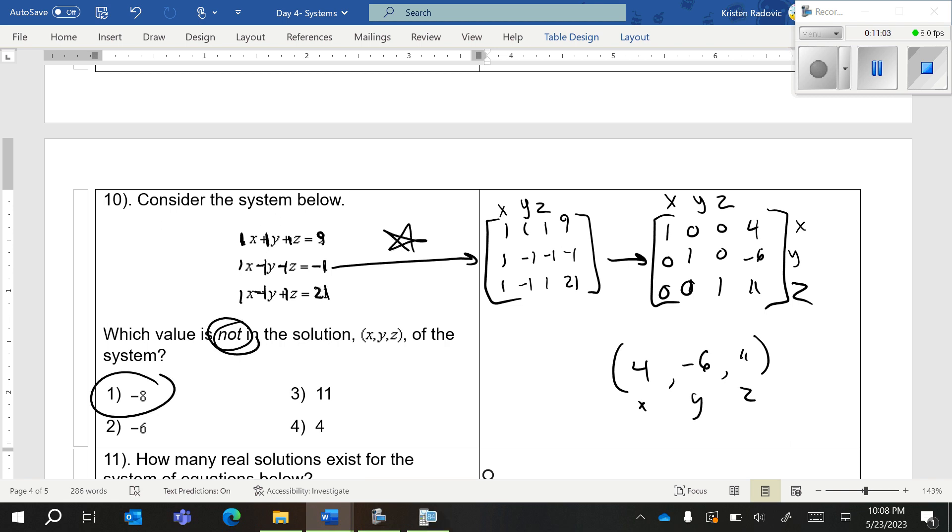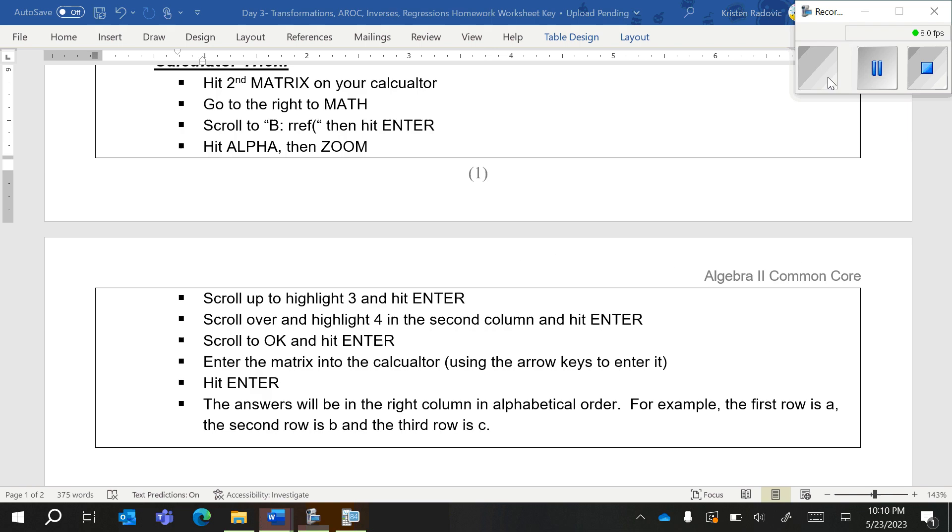The answer here is x, y, z, so it's 4, negative 6, 11, and it's asking which one is not a solution. That would be choice one, negative 8. I know it's a process that you're going to have to remember how to do, but again, you're just going to need to know how to create the matrix but not actually do it in the calculator. That's pretty much it for systems. We'll practice a lot of it tomorrow. There's not too much to know, it's just that the problems take a long time and they're worth up to four points on the regions.